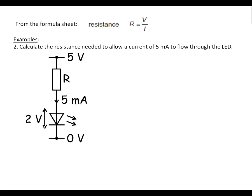We've got 2 volts across here. We've got 5 volts here. 2 volts across the LED. That's 3 volts across the resistor.